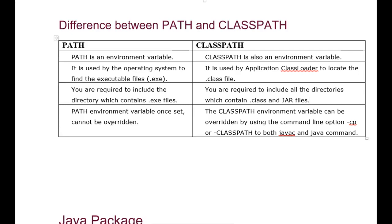The PATH environment variable, once set, cannot be overridden. If we put a path in the PATH variable, it will never be overridden — the same path remains. However, the CLASSPATH environment variable can be overridden by using the command line option -cp or -classpath.